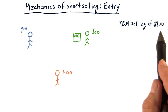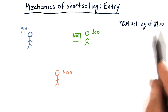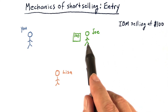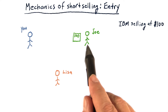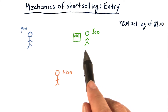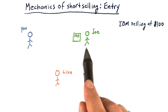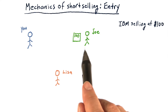That's the current market price. Joe holds 100 shares of IBM. He likes IBM and wants to hold on to it, but he's willing to lend you those shares. In fact, Joe's broker will take care of that for him — he may not even know that he's lending you the shares.